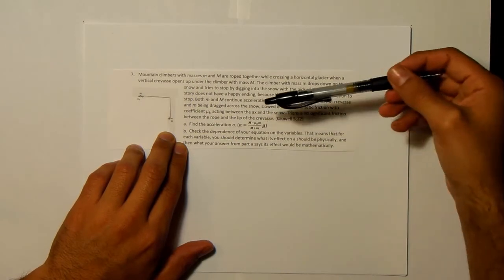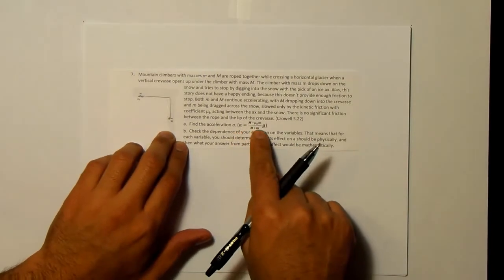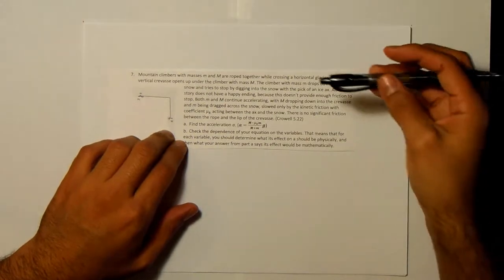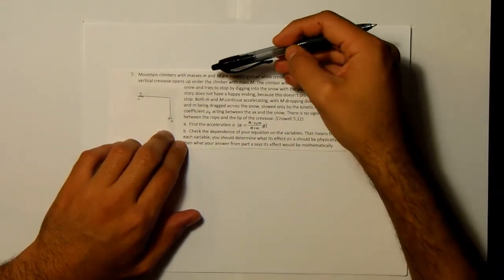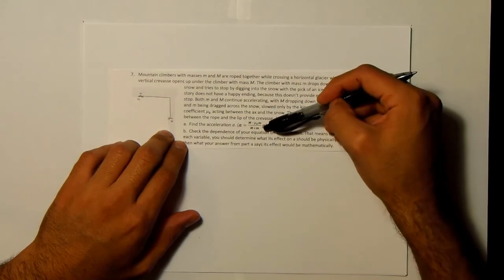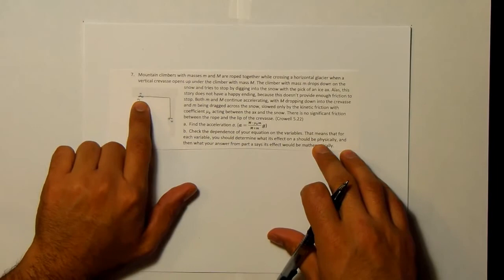And part a asks us to find the acceleration. And if you notice it's going to be in symbols, so everything, there's no numbers here, but we do have, we can assume that we're going to be able to use little m, big M, the acceleration due to gravity, and the coefficient of friction between this guy and the snow.